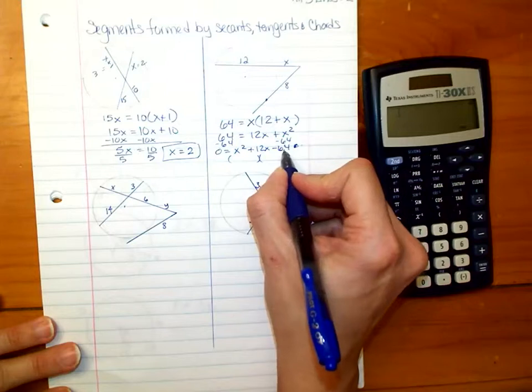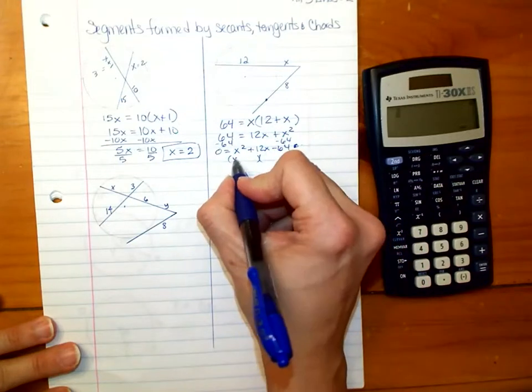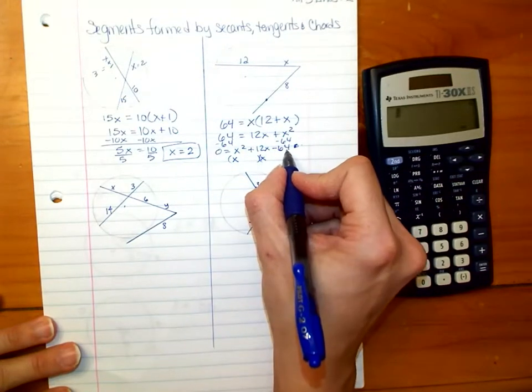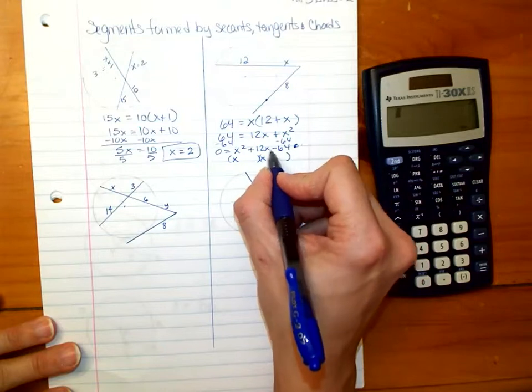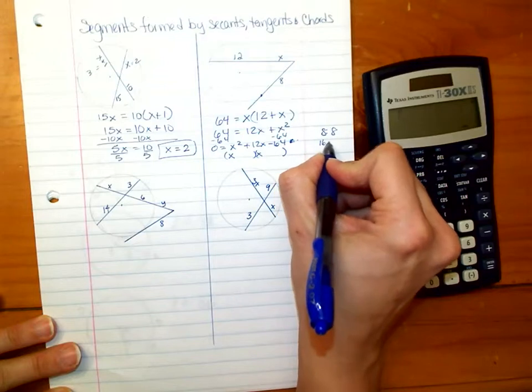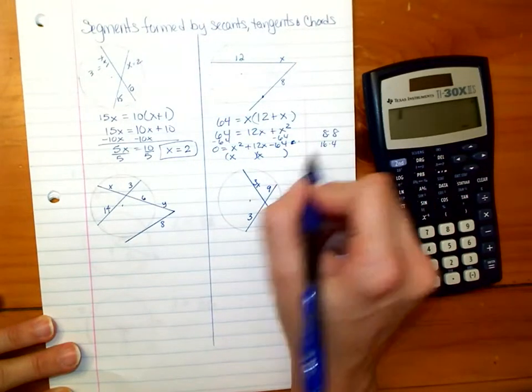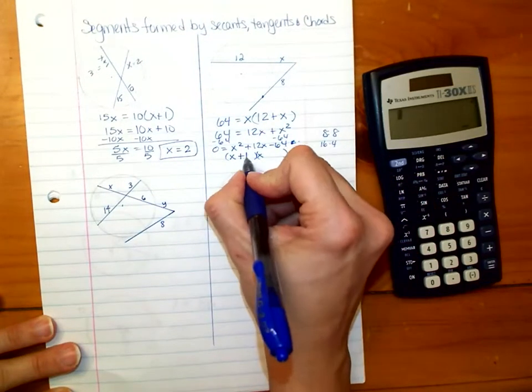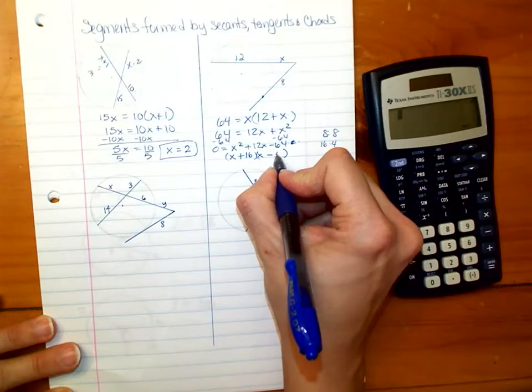Two factors of 64 that subtract to equal 12. Well, I think that would be 16 and 8. 64 is 8 times 8, so 16 and 4 would get to the same thing, and they subtract to equal 12. So we're going to do 16 and minus 4.